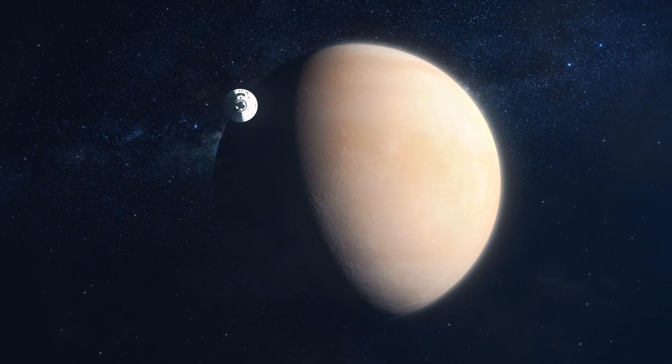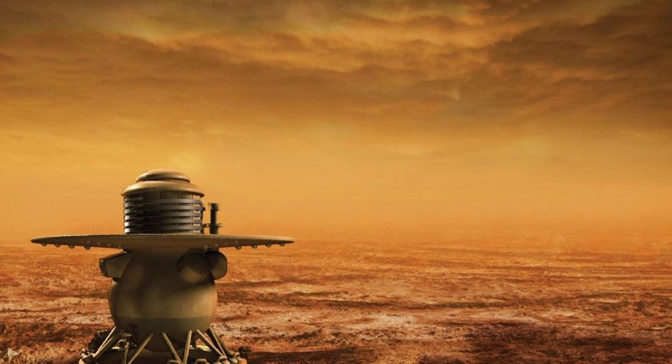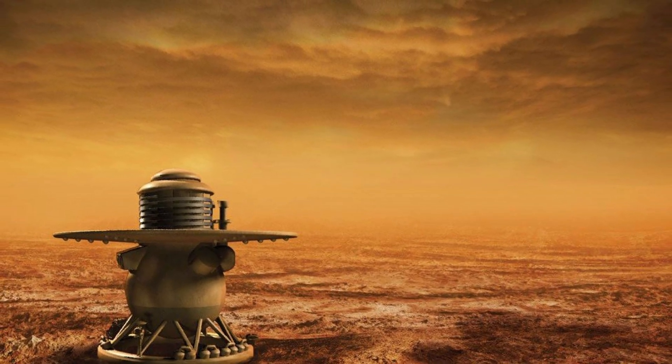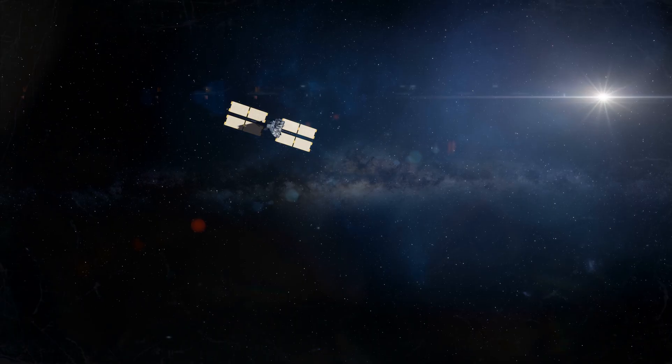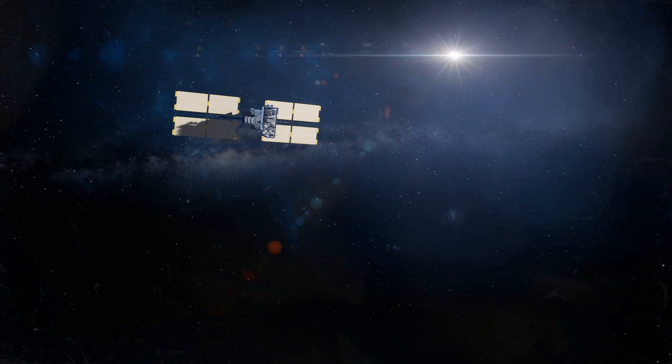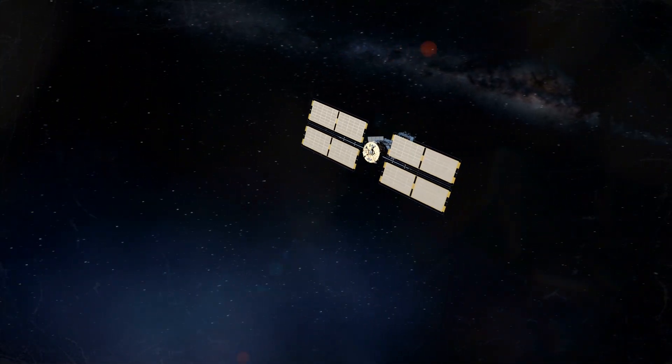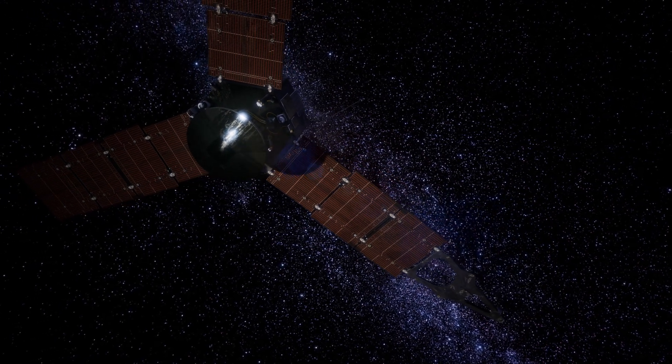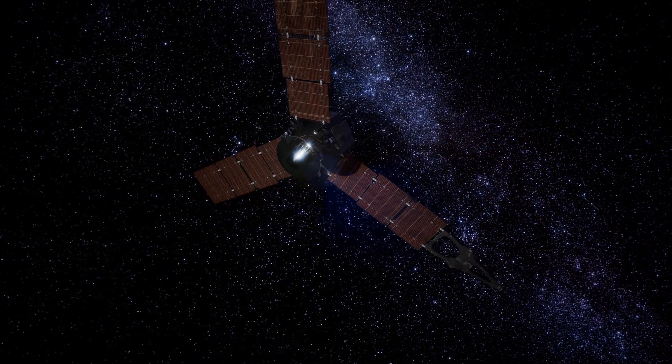Venus is the graveyard of space probes. The Soviet Union's Venera missions were the first to touch down and melt. Venera 13 lasted 127 minutes, which is basically forever in Venus time. NASA's Magellan mapped the planet from orbit in the 90s, but no one's landed there since. Future missions like NASA's Veritas and Europe's Envision aim to crack Venus' secrets. But will they survive?